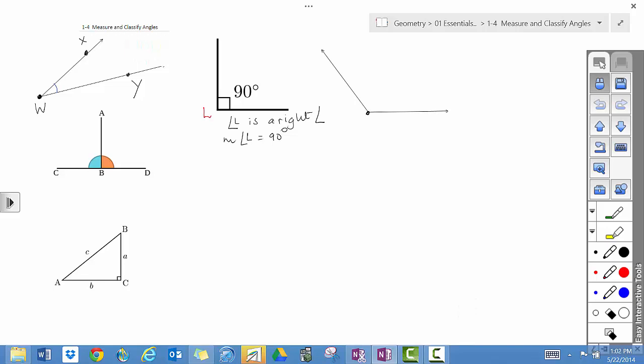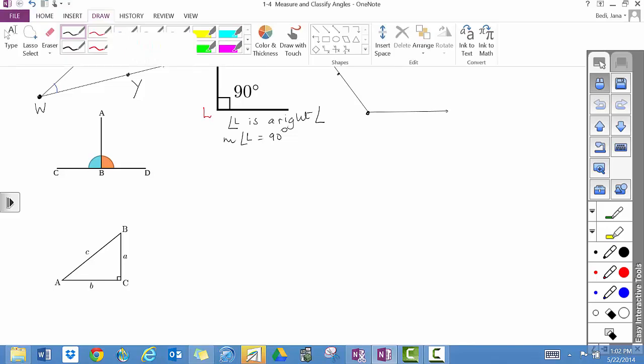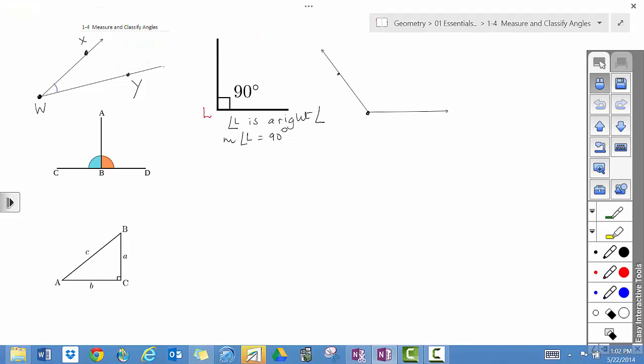Over here we have two rays. T, U. Well I can't write my U for the moment, but not to worry. Let's mark this angle.